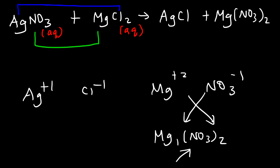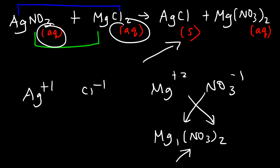Magnesium nitrate is always soluble so it remains dissolved in solution, however silver chloride is insoluble — it forms a solid product. Whenever you mix two aqueous solutions and get a solid product, it is not just called a double replacement reaction; it is also called a precipitation reaction.